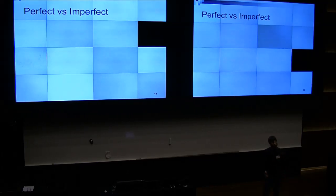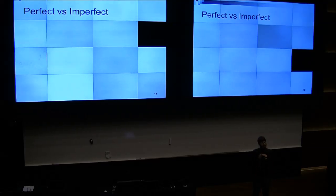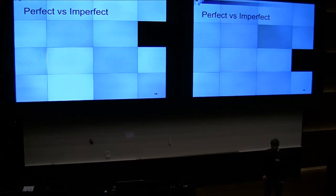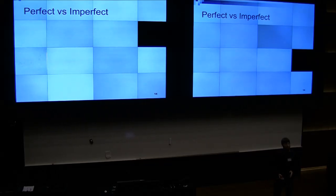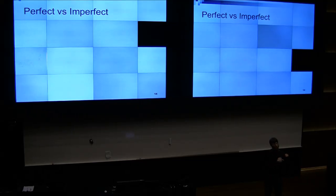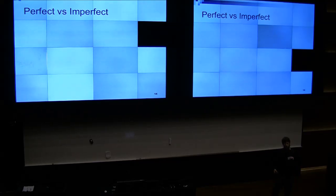Perfect versus imperfect. An imperfect rainbow table is one that you just generate, then sort. The endpoints will have duplicates — basically from chains that merge. You could just call this traditional rainbow tables. The problem with these is that they're larger, but they're faster to create. Perfect — that's where you remove ones that merge. If two chains merge and have the same endpoint, you just throw away one of them. You have to generate more chains, but your end product is much better.